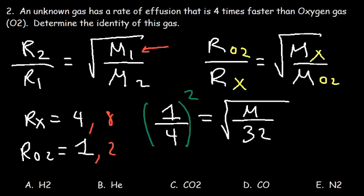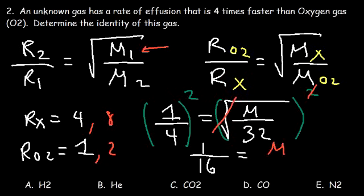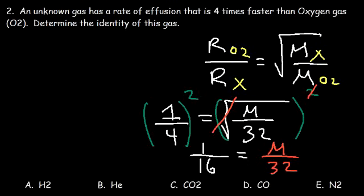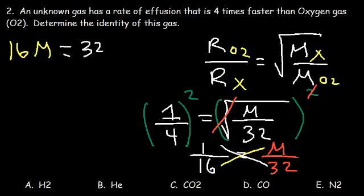Now let's square both sides of the equation. 1 squared is 1 and 4 squared is 16. On the right side, squaring the square root cancels them, leaving M over 32. Cross-multiplying gives 16M equals 32. Dividing both sides by 16, we get M equals 2. So the molar mass of the unknown gas is 2 grams per mole.